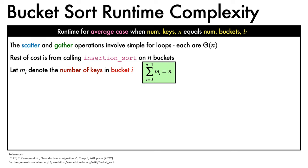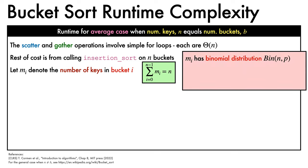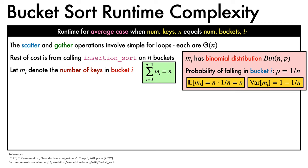Since the keys are uniformly distributed, m_i has a binomial distribution where the probability of falling in bucket i is 1 over n. The expected value of m_i is therefore n times 1 over n, which is 1. The variance of m_i is 1 minus 1 over n.